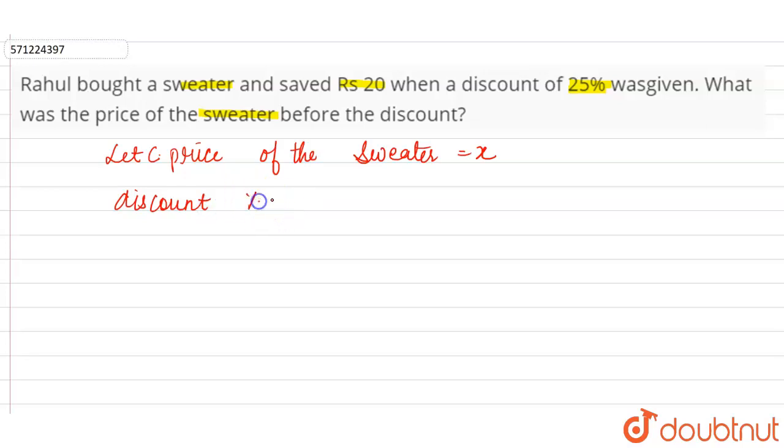Now it is given that 25% discount is Rs 20. So we can write: 25% of x. Discount is given on cost price, so 25% of x is Rs 20. Now we can solve this equation to find the value of x.